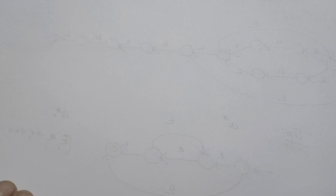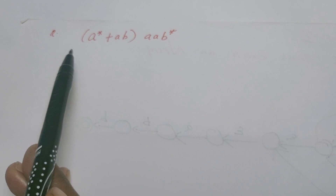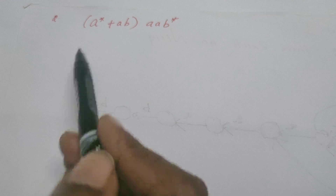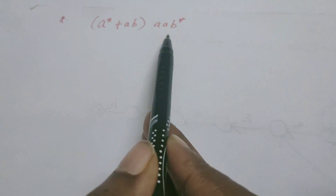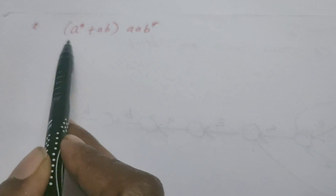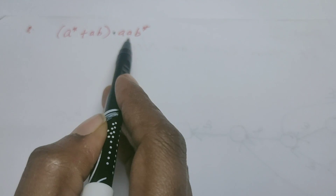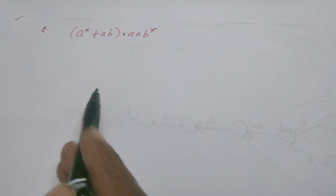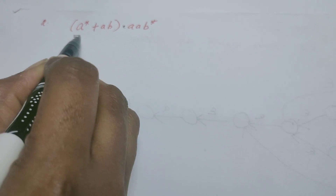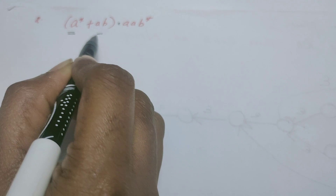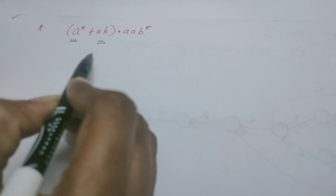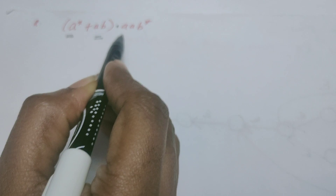Now we move on to the second problem. The regular expression given is a* + ab · aab*. For the whole regular expression we are going to draw the NFSM part by part. First I am going to construct NFSM for a*, then for ab, then for a* union ab, further followed by aab*.